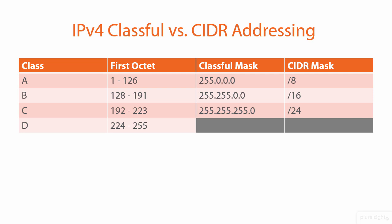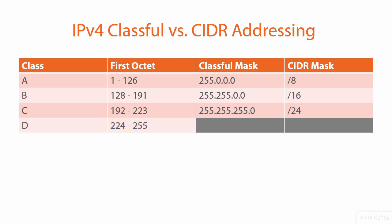Classful means that those classes are divided at octet boundaries. A class B address uses a 255.255.0.0 mask, and the first octet goes from 128 to 191. Class C is a 24-bit network; the mask is 255.255.255.0, and the first octet is 192 to 223. Class D addresses have a first octet value of 224 to 255, and those are used in IP multicasting.